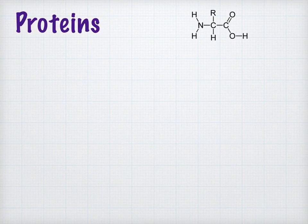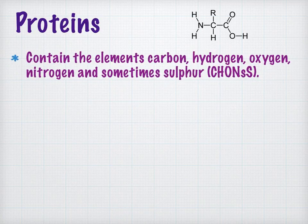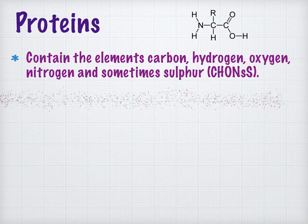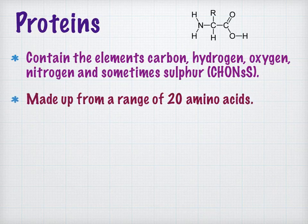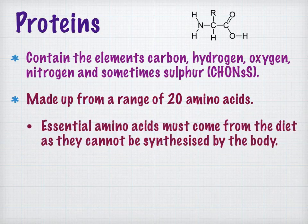Moving on to proteins. The chemical elements within a protein are carbon, hydrogen, oxygen, nitrogen and sometimes sulfur — memorised using the word CHONS. All proteins are made up from a range of 20 amino acids, the same in all living organisms. There are a small number of essential amino acids, which vary by species — these must be present regularly in the diet because they can't be synthesised from other amino acids in the body.